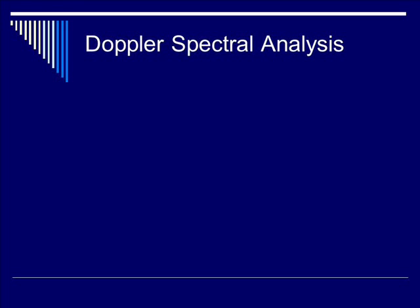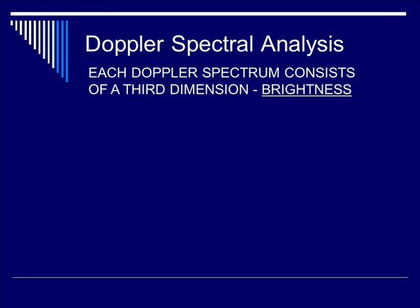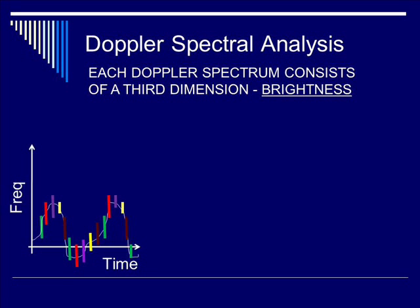Let's continue our discussion on Doppler spectral analysis. As you saw in the previous segment, the time domain data is converted to frequency domain. For a 10 millisecond time segment, we convert that into approximately 100 data points per spectra, as indicated in this plot below. Now for each spectra, there are various gradations of signal covering a range of frequencies.